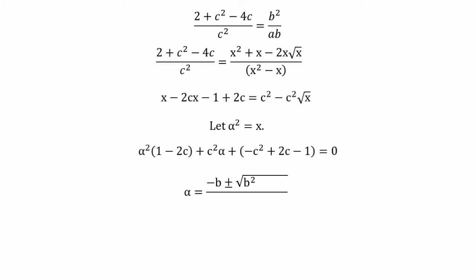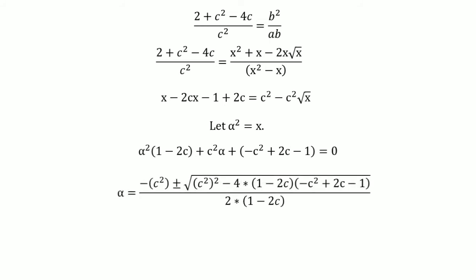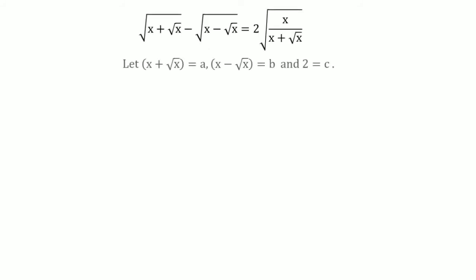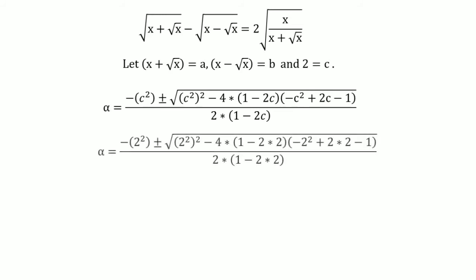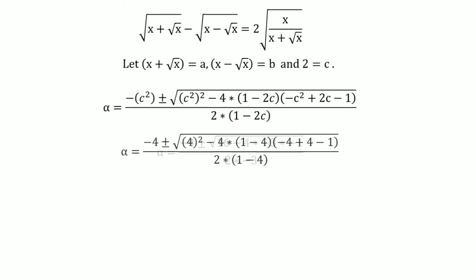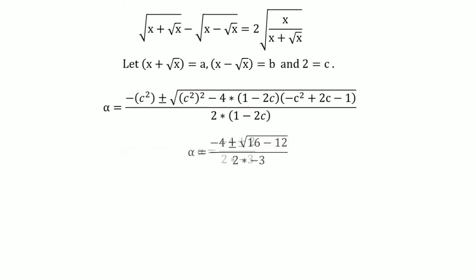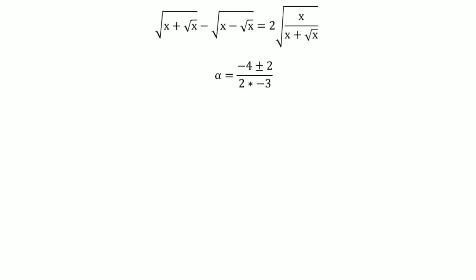Using the quadratic formula, α = (−b ± √(b² − 4ac)) / 2a, we substitute the values. With c = 2, we simplify to get α = (−4 ± 2) / (2 × −3).